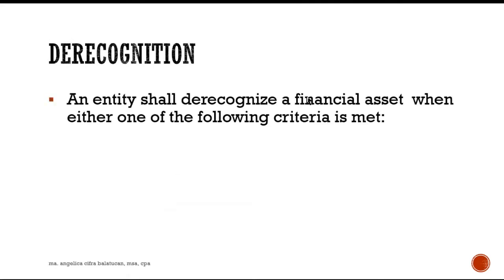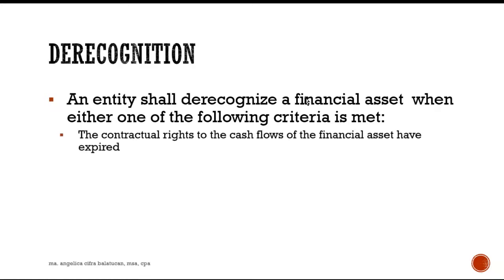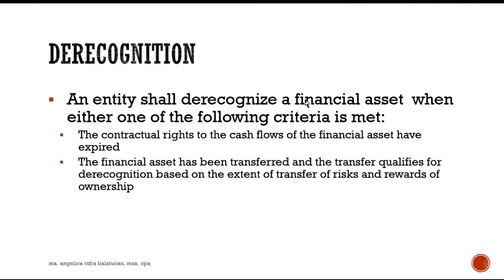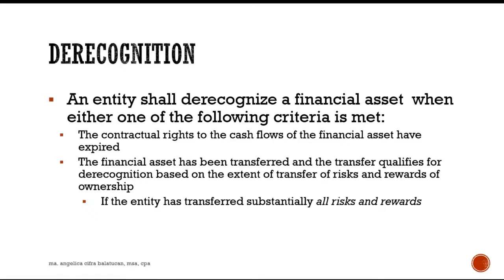An entity shall derecognize a financial asset when either one of the following criteria is met: if the contractual rights to the cash flows of the financial asset have expired, or if the financial asset has been transferred and the transfer qualifies for derecognition based on the extent of transfer of risks and rewards of ownership — specifically when substantially all risks and rewards are transferred or when the entity has lost control of the asset.